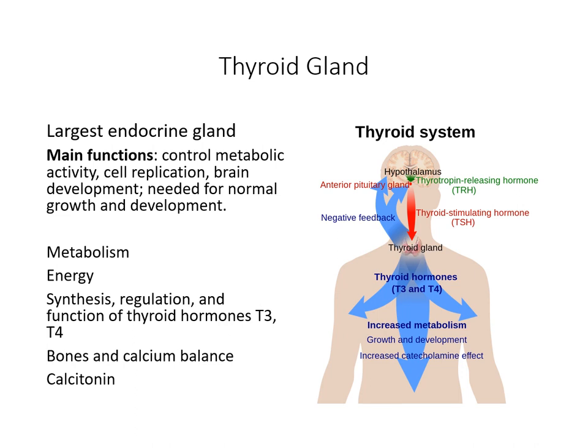The thyroid gland produces hormones that regulate the body's metabolic rate, growth and development, and plays a role in controlling heart muscle, digestive function, brain development, and bone maintenance. The thyroid also helps control calcium balance by releasing calcitonin in response to high plasma calcium levels in the blood. When we have high plasma calcium levels, calcitonin increases calcium deposit back into the bones.